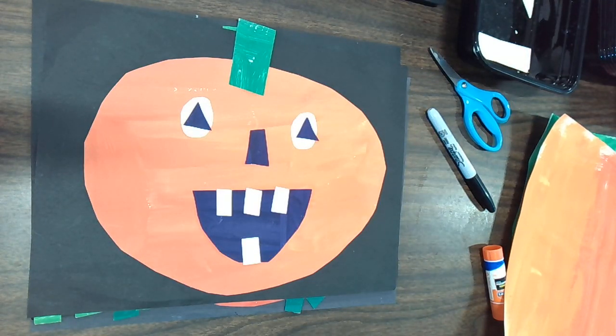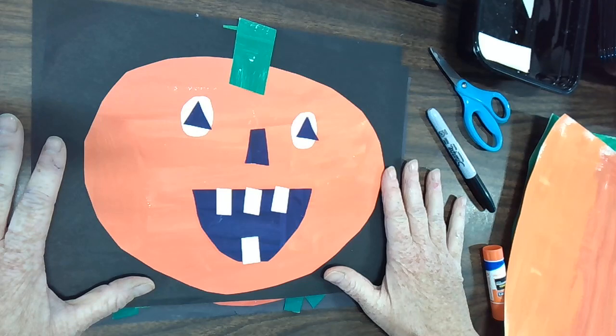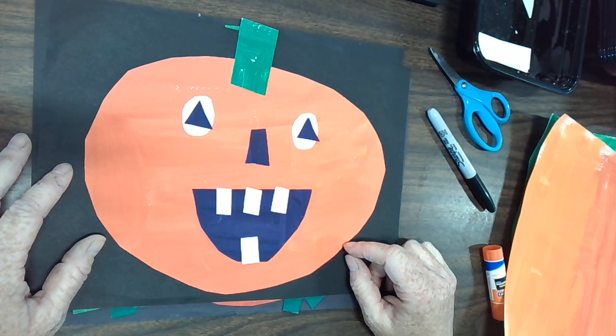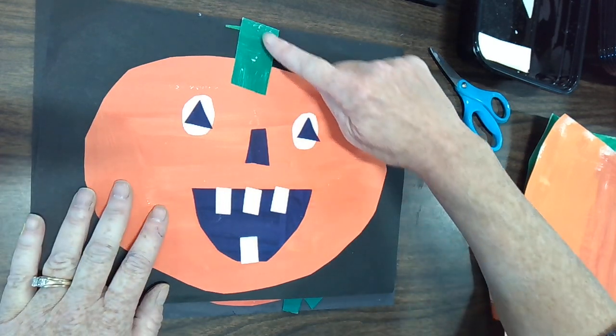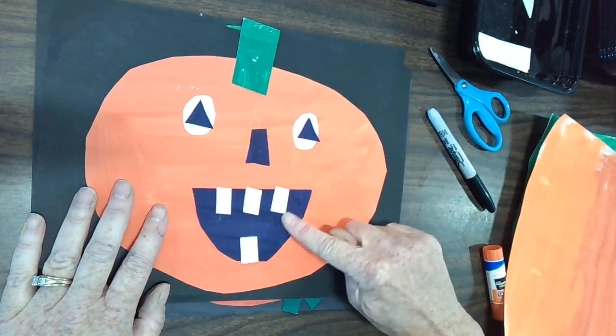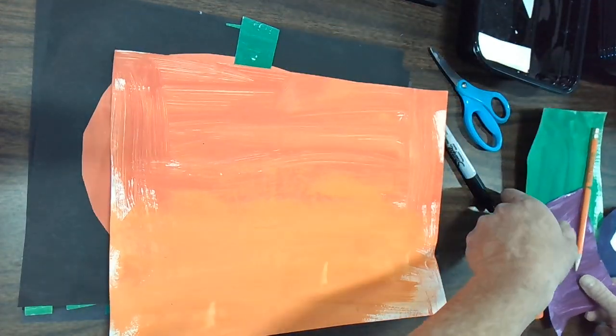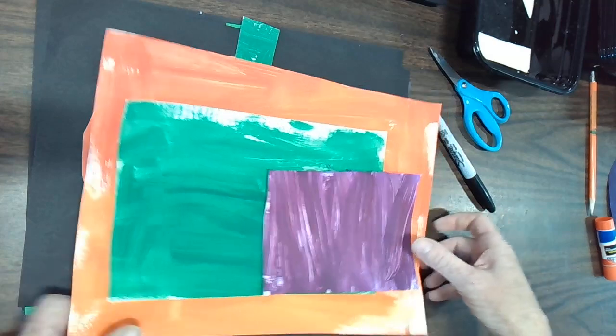Hi everybody! Today I'm going to show you how to make a really cute jack-o-lantern with the painted papers that we made last time. Remember we used the primary colors to make the secondary colors which are green, orange, and purple, and we're going to be using those papers that we painted to make our jack-o-lanterns.